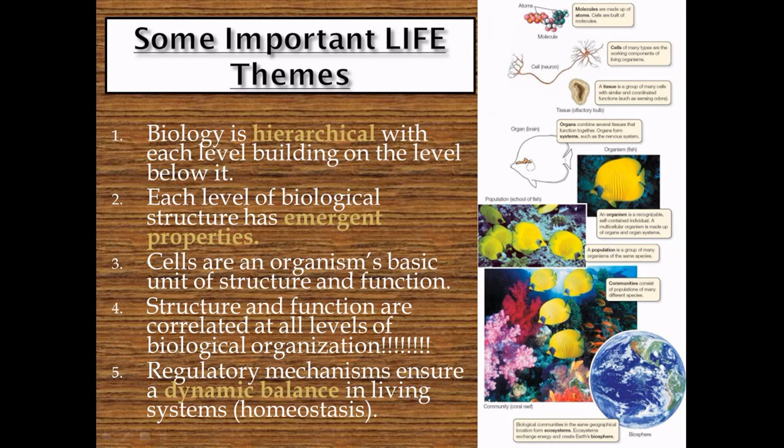We're not made from nothing. We actually start as something — things like molecules. The molecules add together and they build organelles, and organelles build cells, and we just keep building upon that. So each level depends on the level below it to work properly. We refer to this also as having emergent properties — the biological structure or function of each of these different levels has to work.